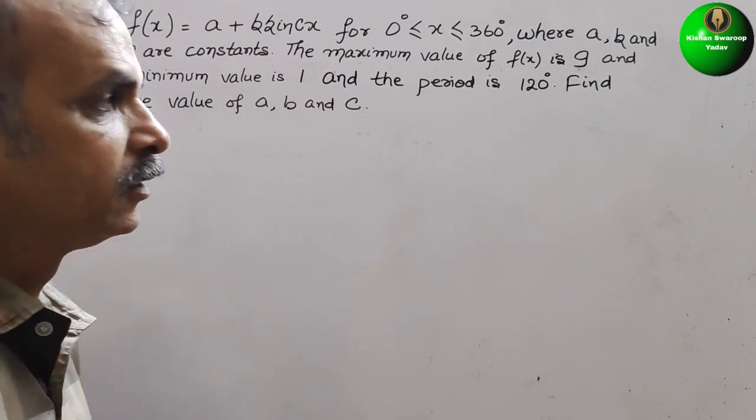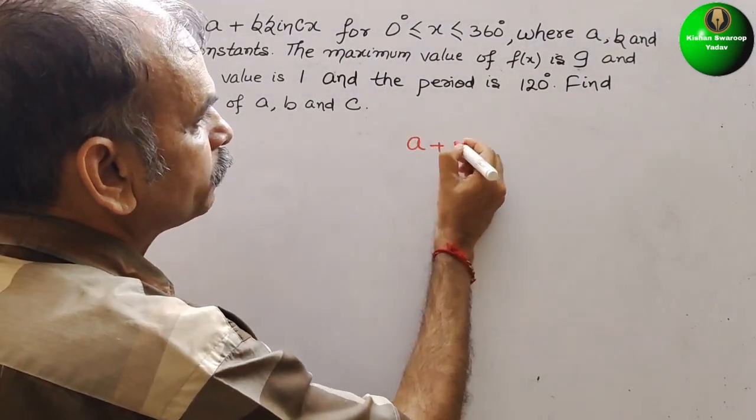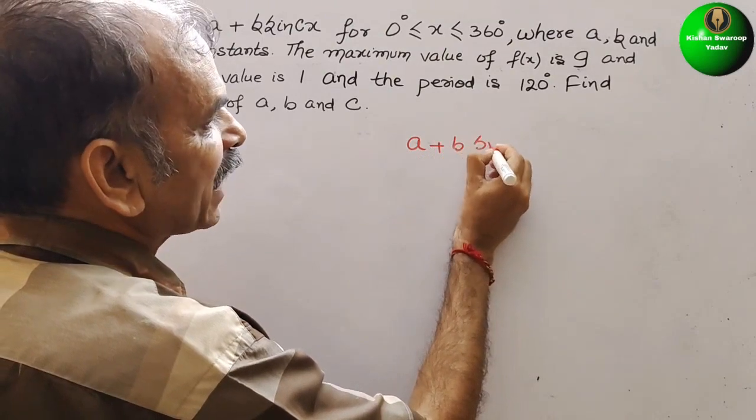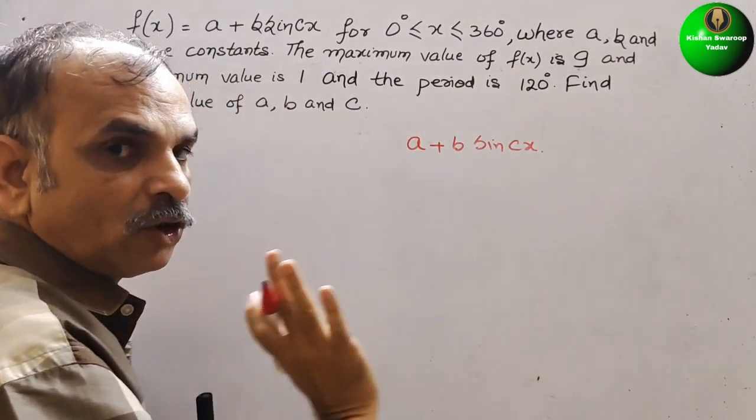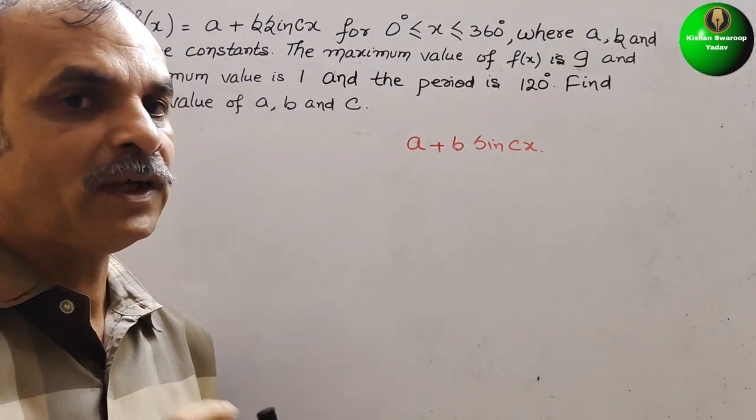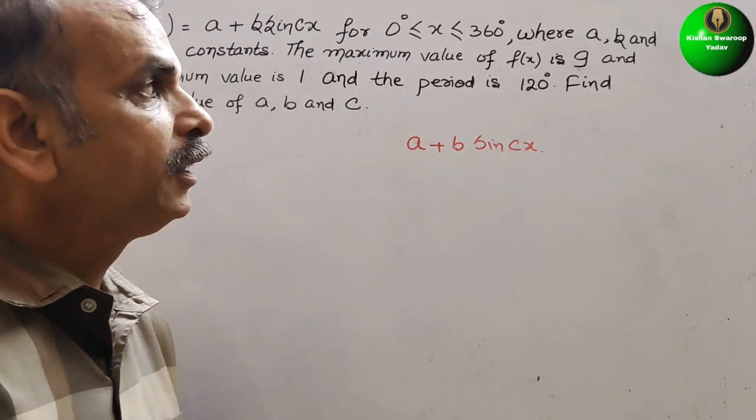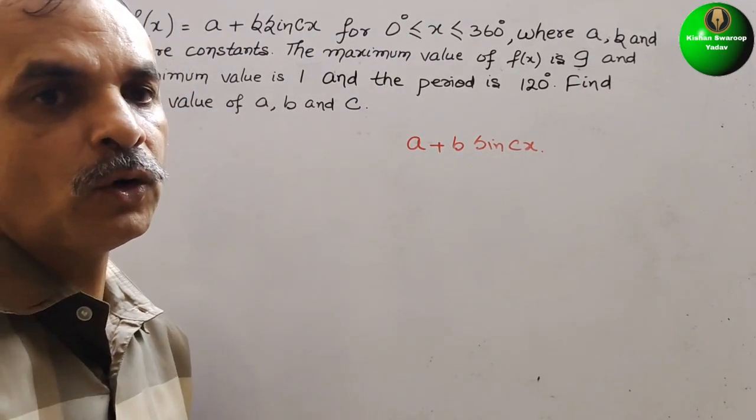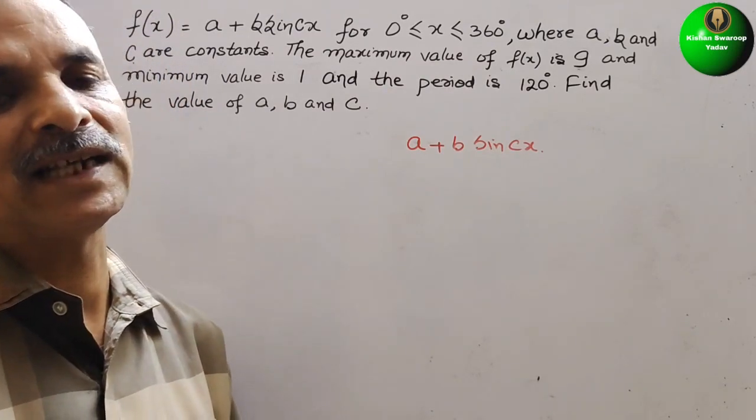So first, what they have given, see that they have given you a plus b sin(cx). This only they have given. So if you understand that, what they have given, see the conditions. Conditions we have to go in reverse direction. In reverse direction.